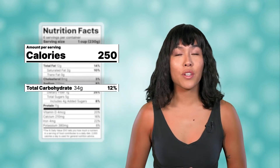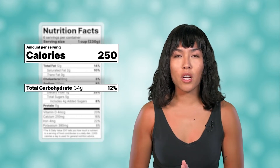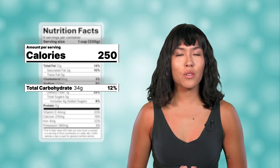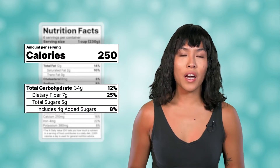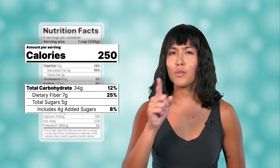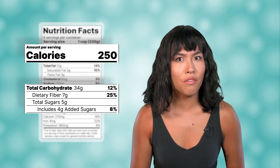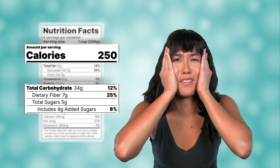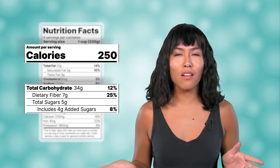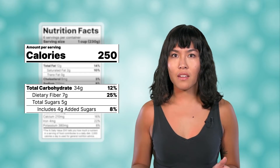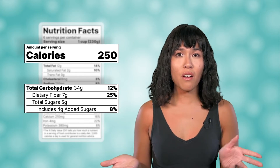Let's look at carbohydrates. There are 34 grams of carbs in a serving of this food. But carbohydrates also have subcategories listed below — fiber and sugars. But those two numbers don't add up to the total carbohydrate value. What does all of this mean? How can I tell what kind of molecules are in this food? And how do I know if it's healthy or not? A nutrition label makes a lot more sense if you know what macromolecules are.